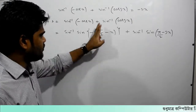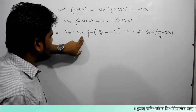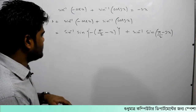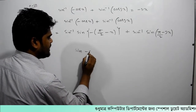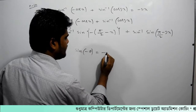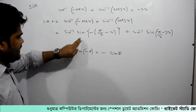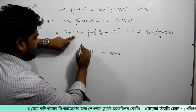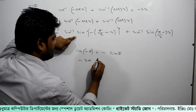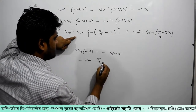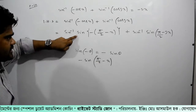We are using the result that sin inverse of sin θ equals θ. Applying this: sin inverse of sin(π/2 minus x) gives us minus x.